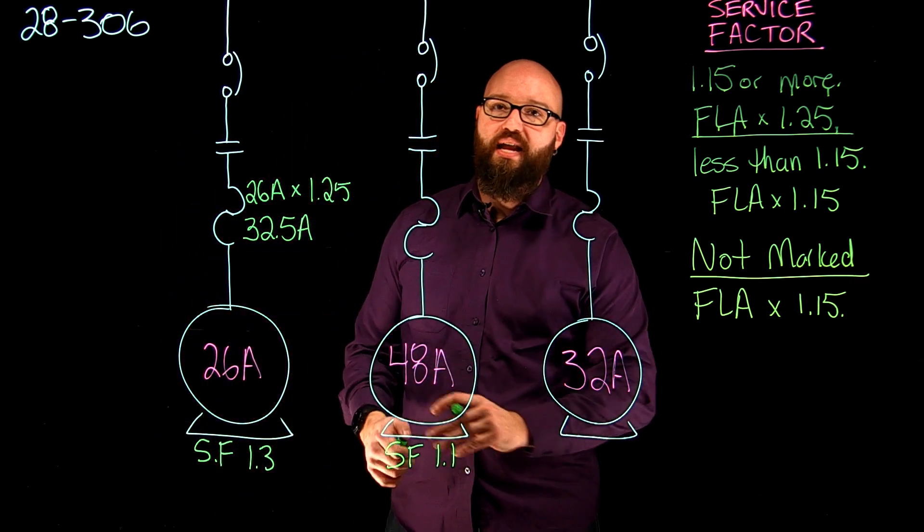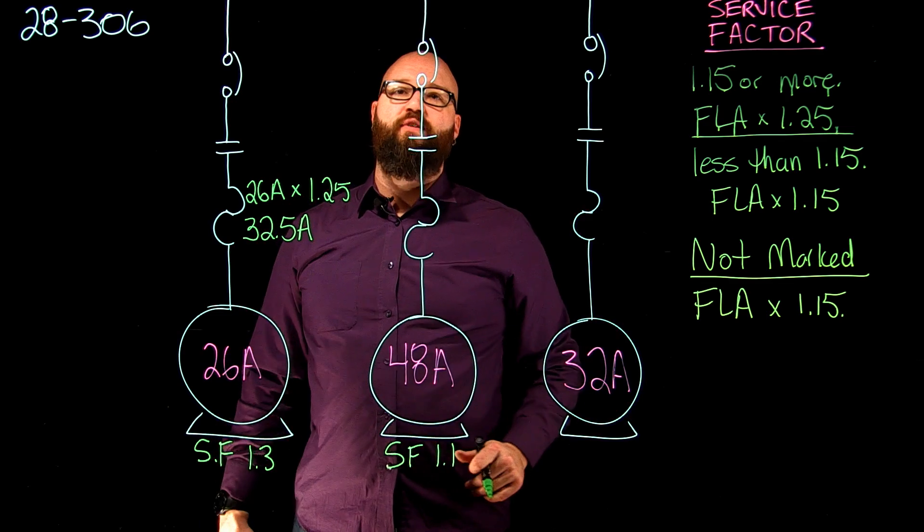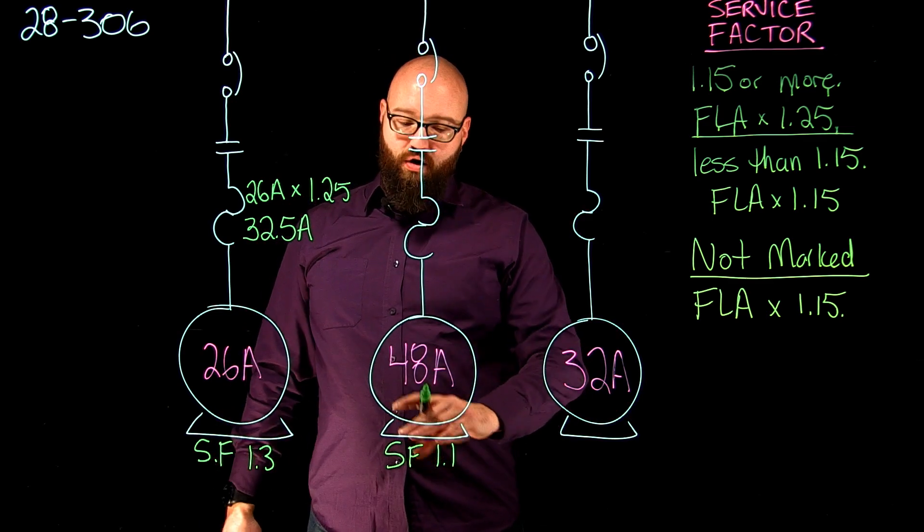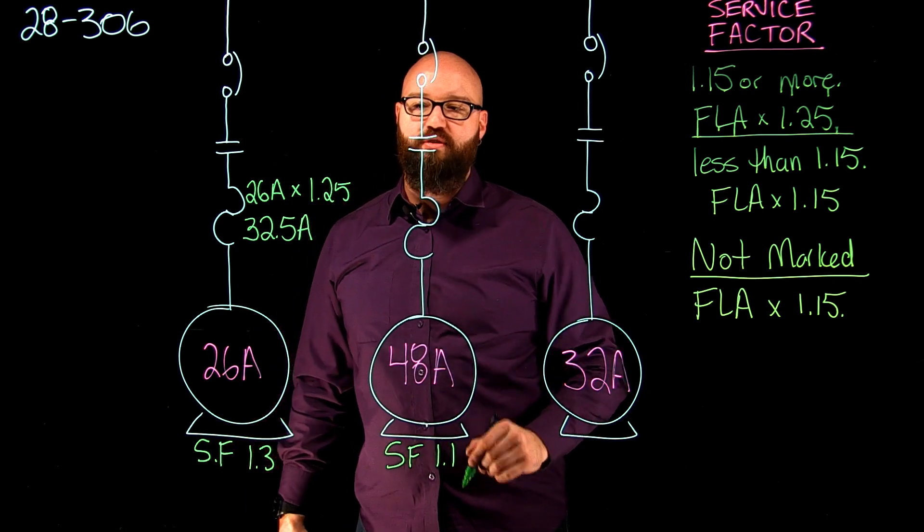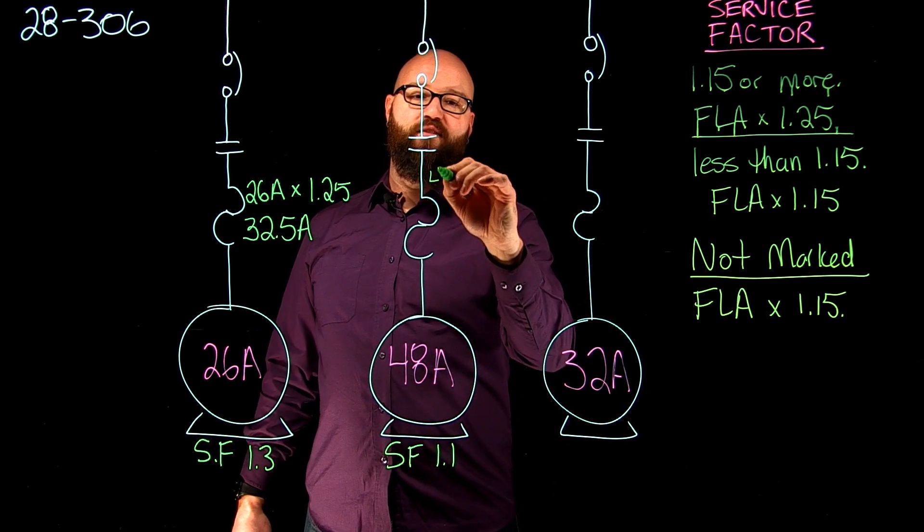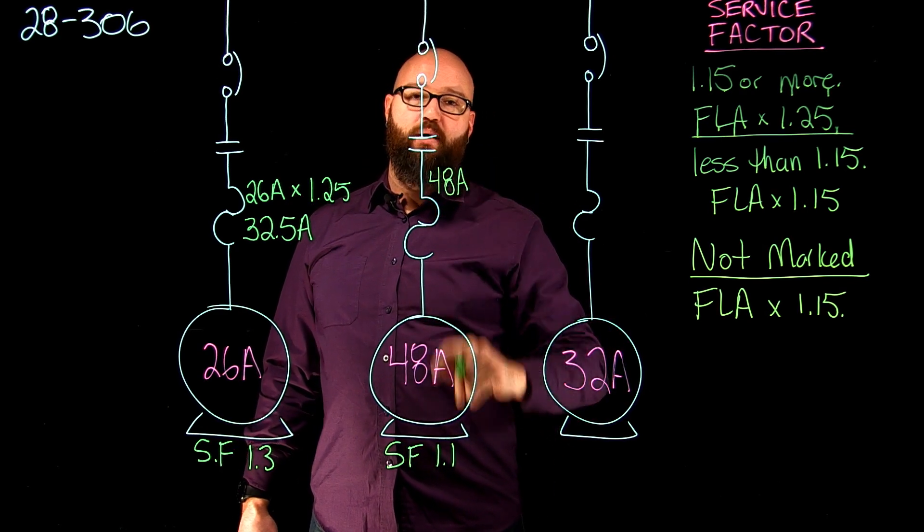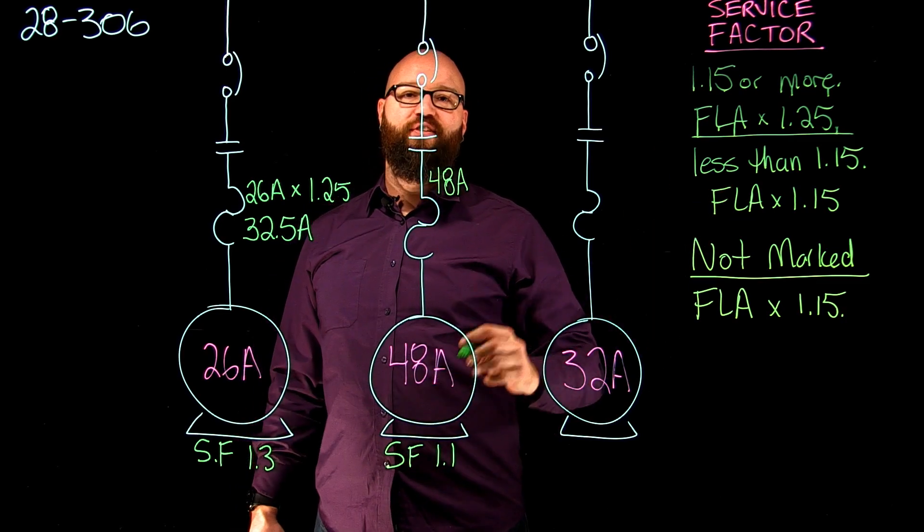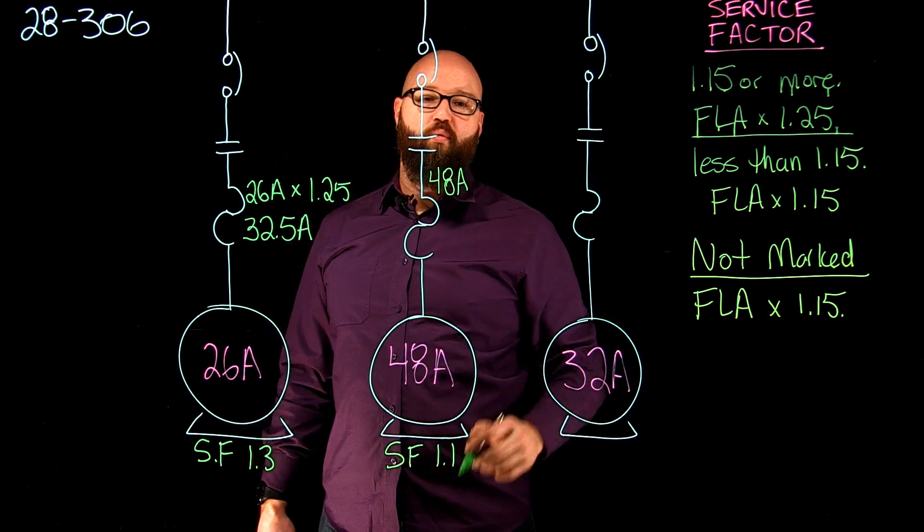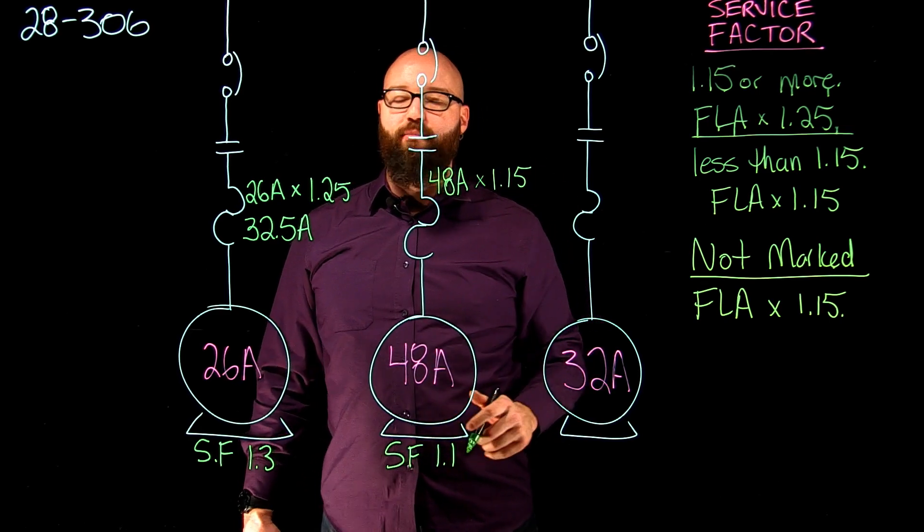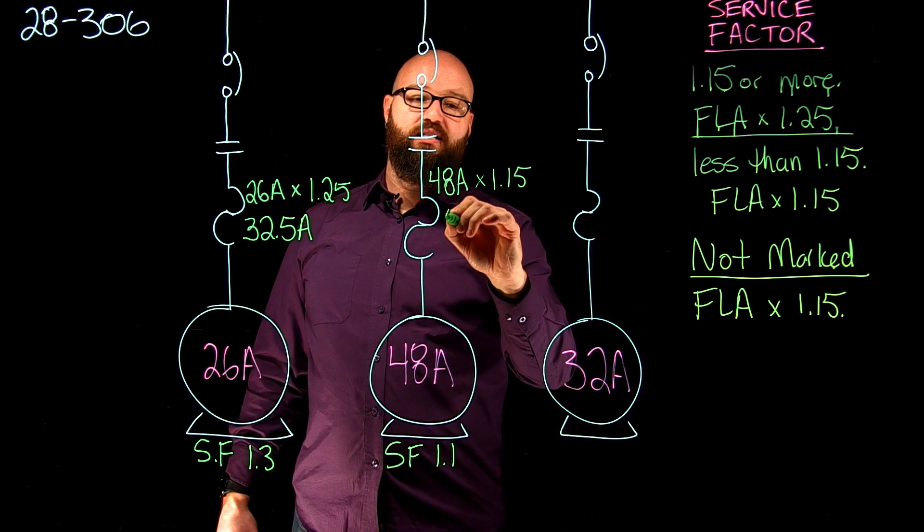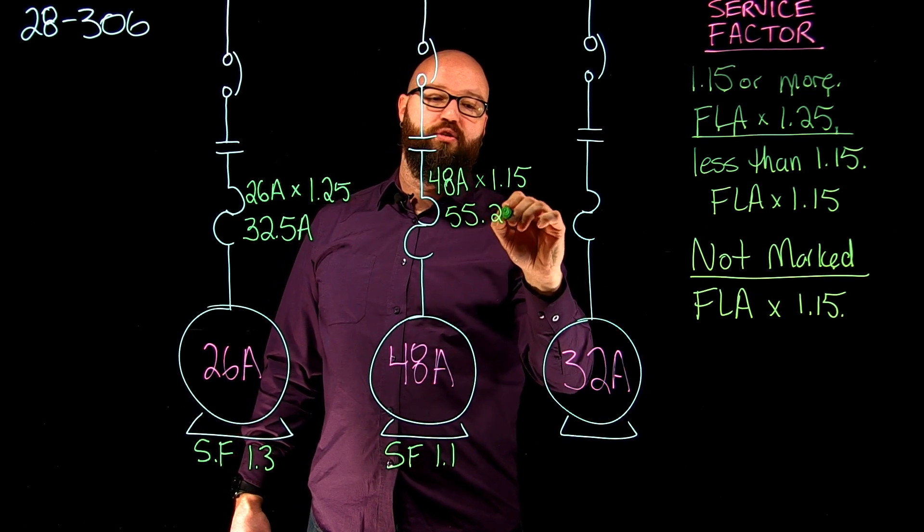Our second motor we have 48 amp FLA and a service factor marked of 1.1 or 110%. So again, using what we've talked about in 28306, we're going to take our FLA of 48 amps and multiply it by that 115% because again it's under 1.15. So times 1.15 gives us a maximum overload setting in this case of 55.2 amps.